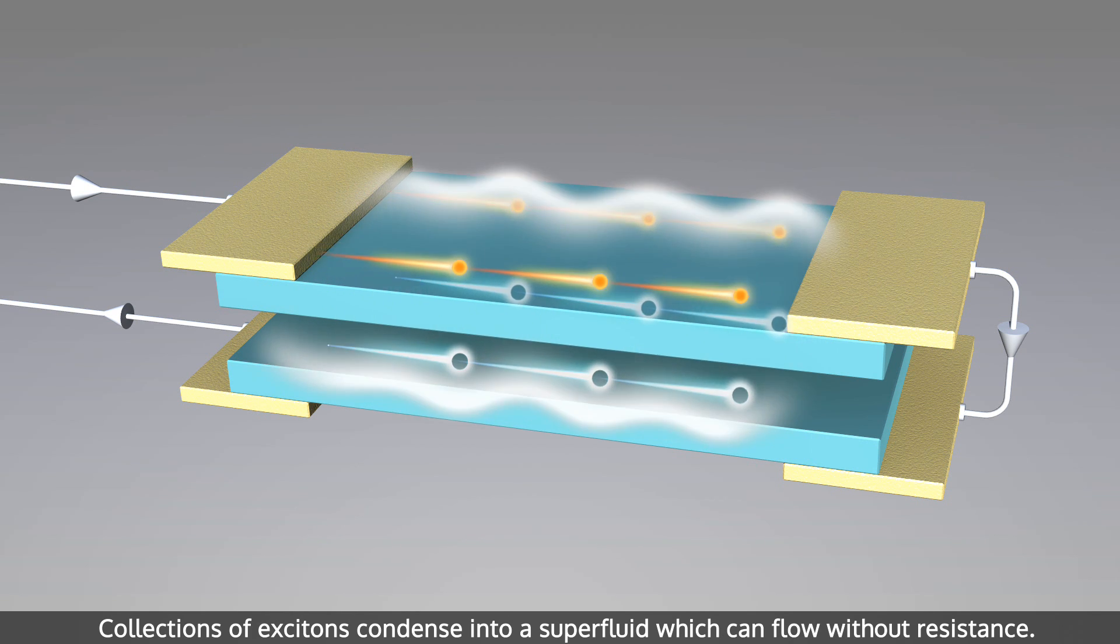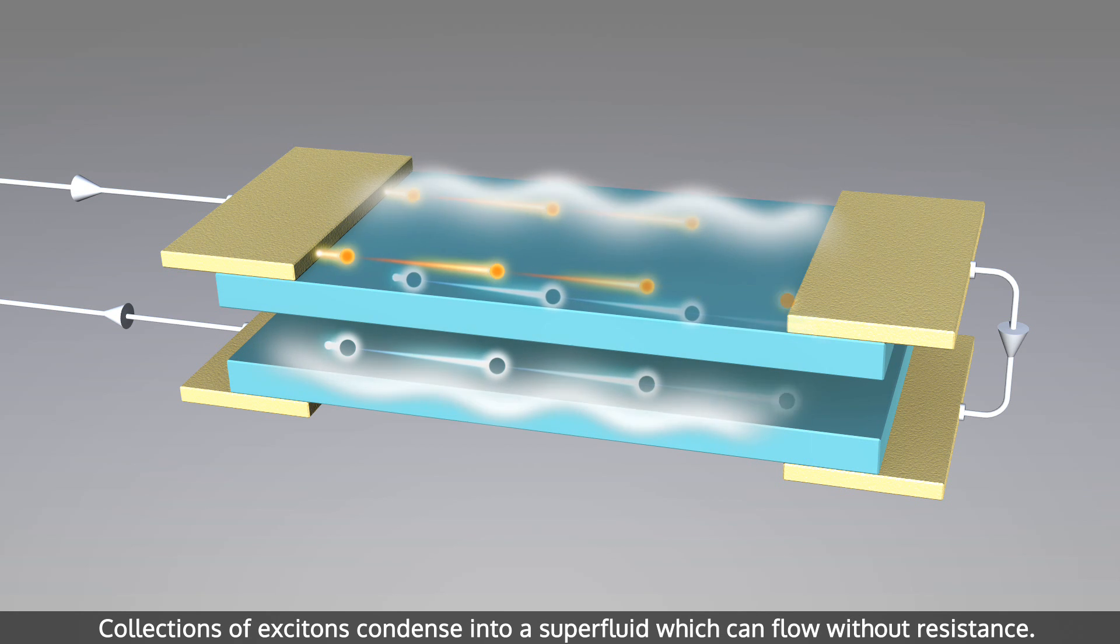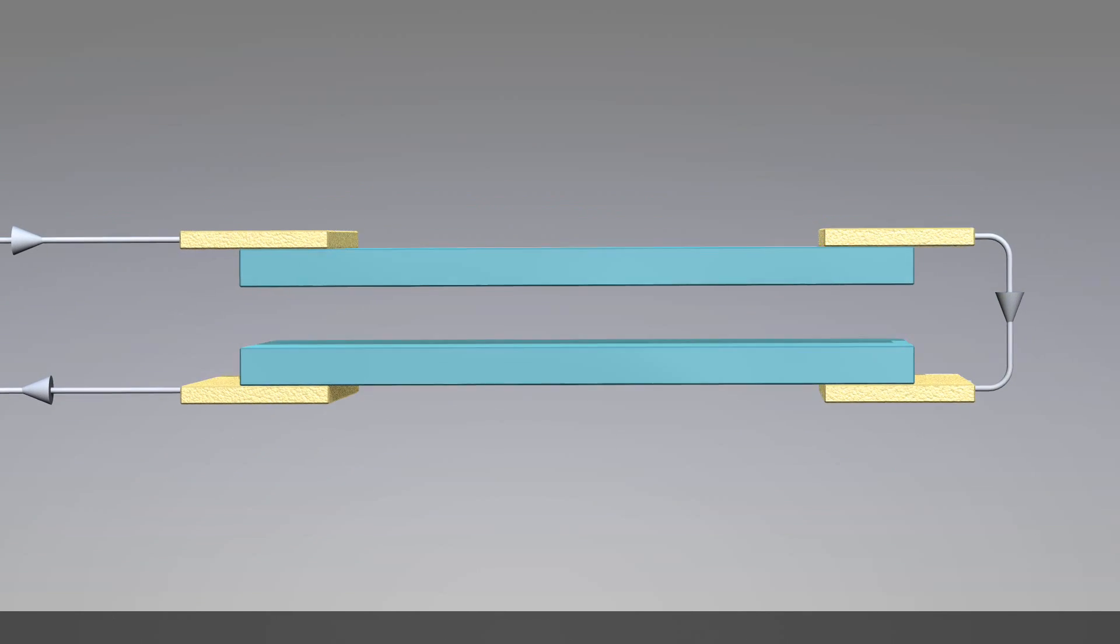Collections of excitons condense into a superfluid, which can flow without resistance. This superfluid can carry electrical currents in opposite directions in top and bottom layers.